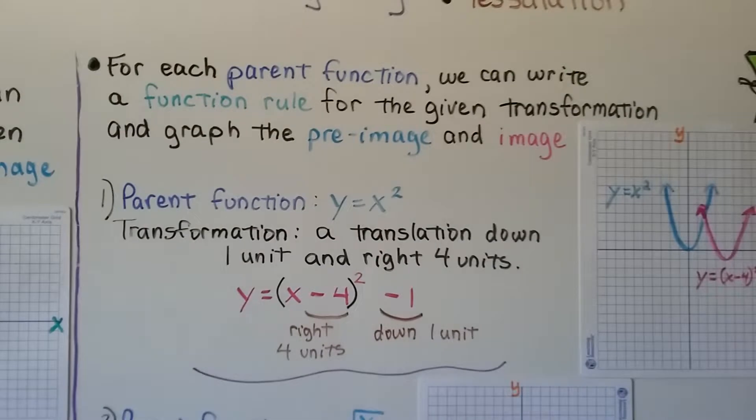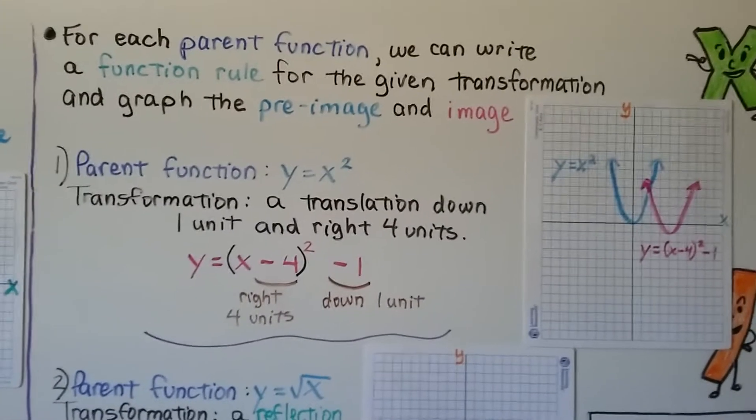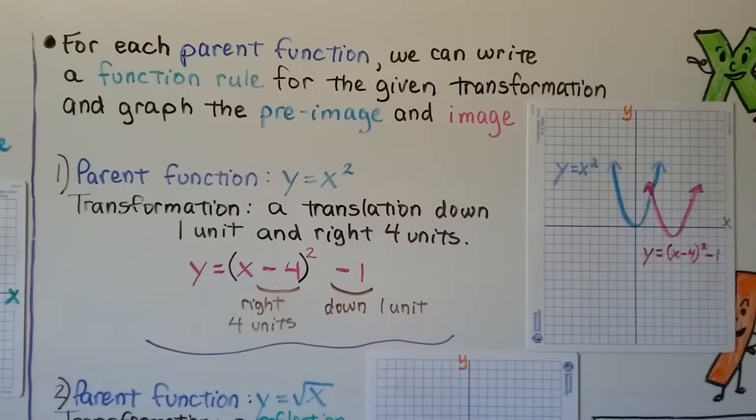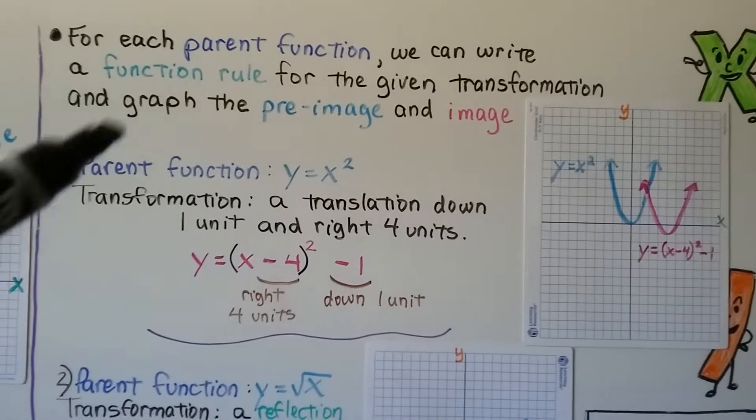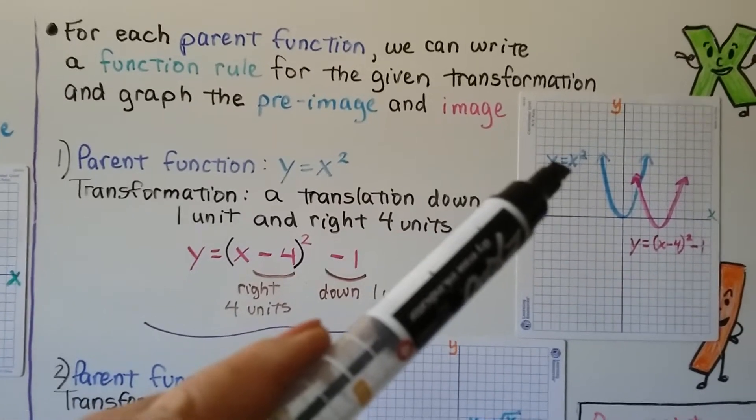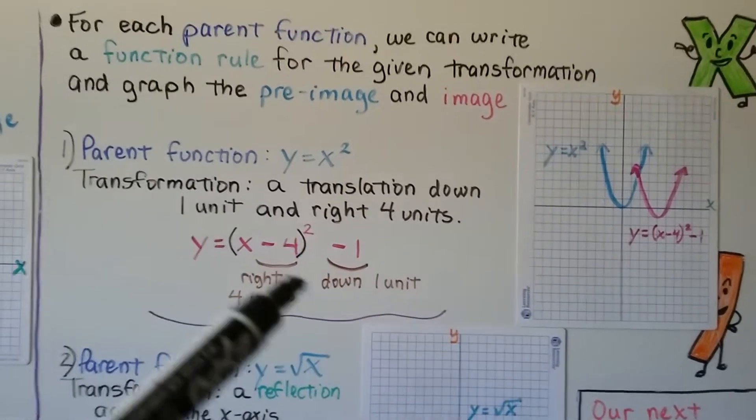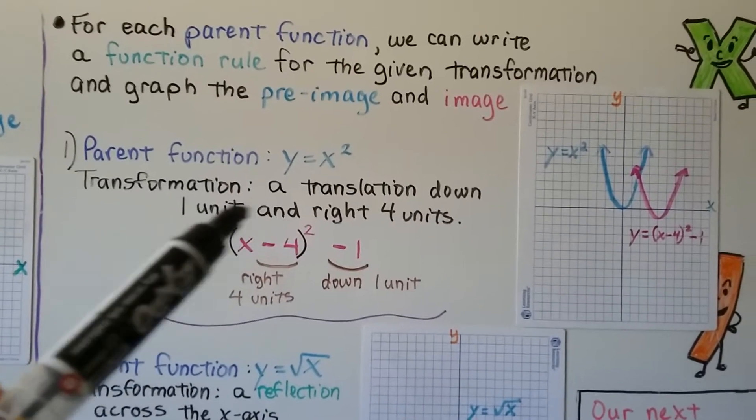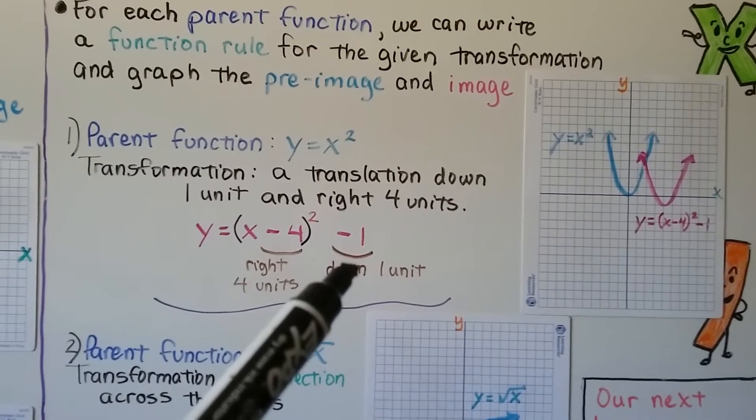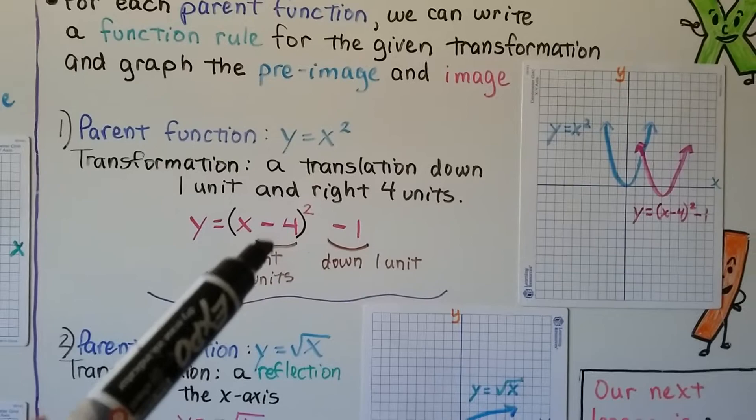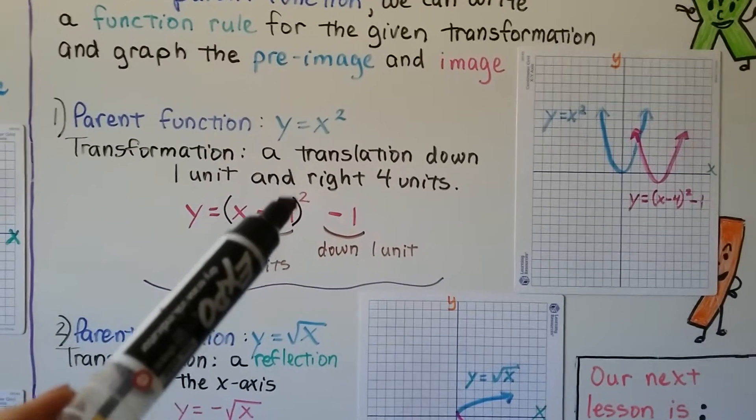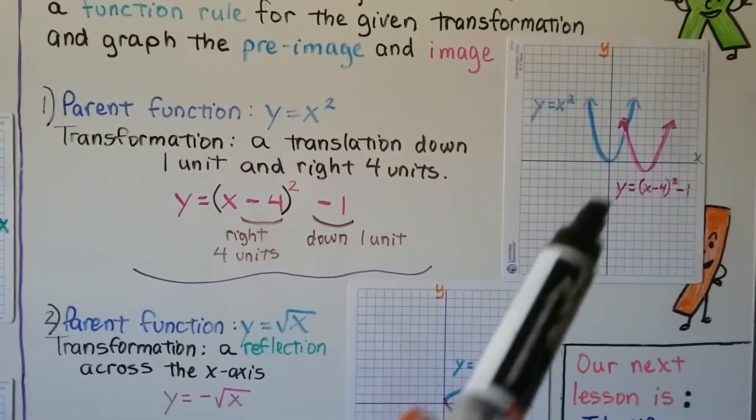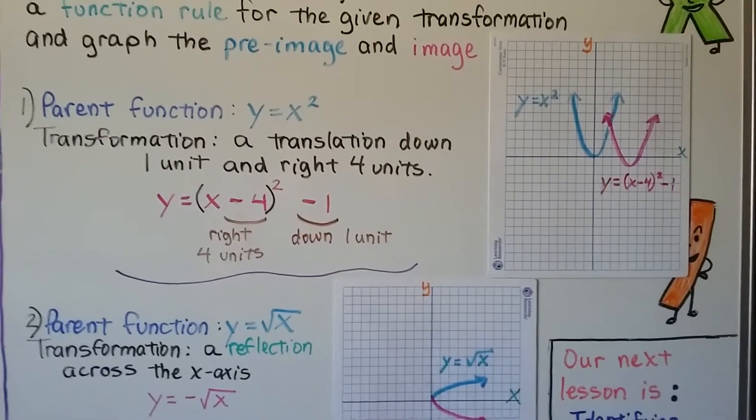For each parent function, we can write a function rule for the given transformation and graph the preimage and the image. So for the parent function y equals x squared, this blue one, for a transformation, a translation down one unit and right four units, we have y equals x minus four squared minus one. And the pink one would be it graphed.